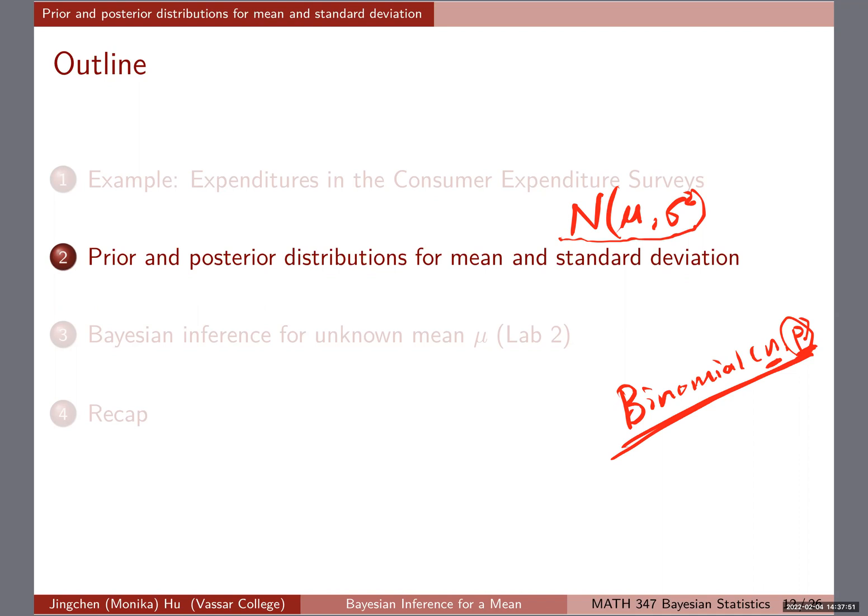You'll see we're going to do something very similar. If μ is the only unknown parameter and σ is known, then μ is the only unknown I need to give a prior distribution. We're going to find out my likelihood given my data.